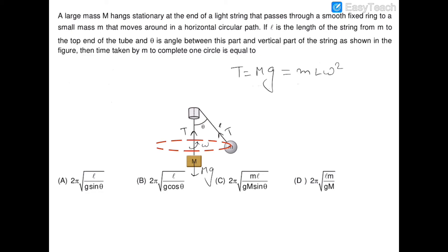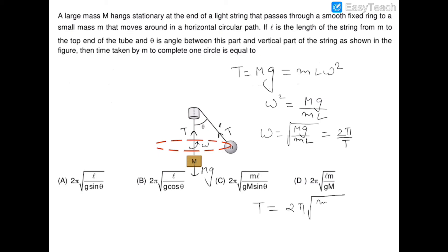The tension also equals ml omega squared from the conical pendulum result. Therefore, omega squared equals Mg divided by ml, and omega equals the square root of Mg over ml, which equals 2 pi over T. So the time period T equals 2 pi times the square root of ml over Mg. The correct answer is option D.